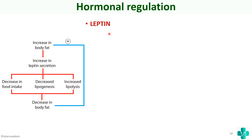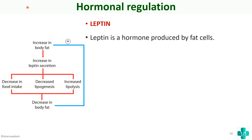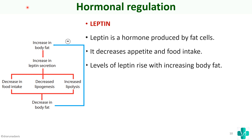Leptin is produced by fat cells and its function is to decrease appetite and food intake. The levels of leptin rise with increasing body fat, since it is produced by fat cells.